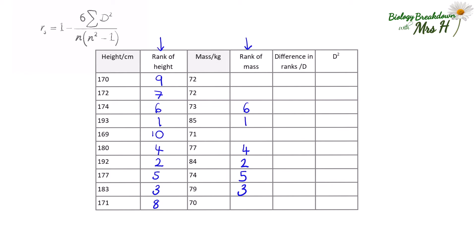Notice that there are two 72kg masses. How do we rank those? Well, they take up rank positions 7 and 8, but because they are the same value we have to give them the same rank, which is halfway between rank position 7 and rank position 8. So 7.5 is what we give them. Then we have to continue ranking from 9 onwards.